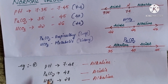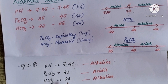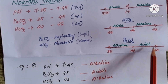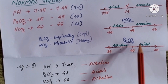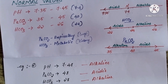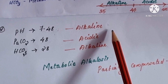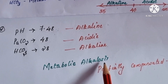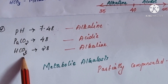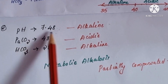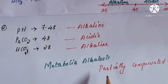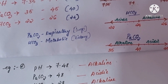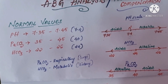One more example: pH is 7.48, PaCO2 is 48, and bicarb is 28. pH above normal is alkaline, PaCO2 increasing is acidic, and bicarb increasing is alkaline. pH is alkaline and bicarb is also alkaline, so the primary condition is metabolic alkalosis. The pH is not in the normal range, so this is partially compensated. I hope you understand — if you like the video, please like, share, and subscribe. Leave a comment if you have any doubts. Thank you.